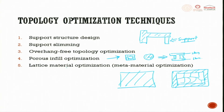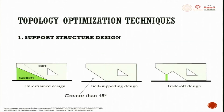The last technique is lattice material optimization for metamaterial applications. Metamaterials are artificially made materials that do not follow nature's laws. In support structure design there are three types: unrestrained design, where full support is given; self-supporting design, where the object supports itself during manufacturing; and trade-off design, which uses a small support structure.